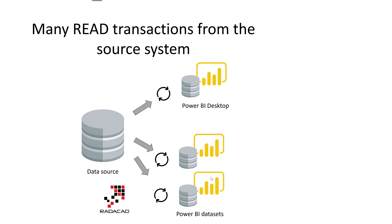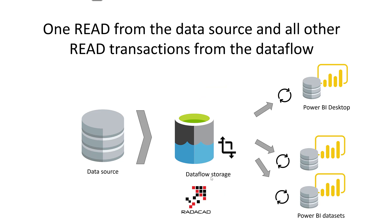Having a lot of reads from the source system is not always ideal. Having a layer of data flow in between — even if it's just the same data loaded as another database layer — helps because you only read data from that data source once. This is normally scheduled once a day, eight times a day, or even more, but the number of reads from the source is much more limited compared to reads from multiple Power BI datasets. Your Power BI datasets now refresh from the data flow storage, meaning your operational system users won't be impacted.